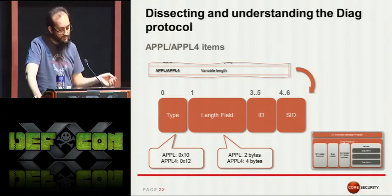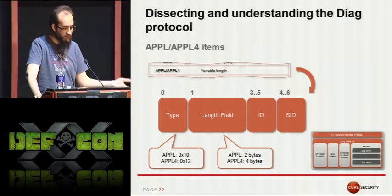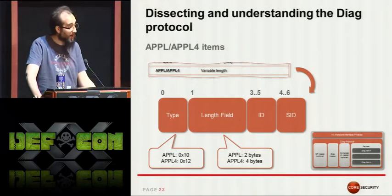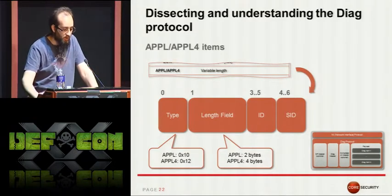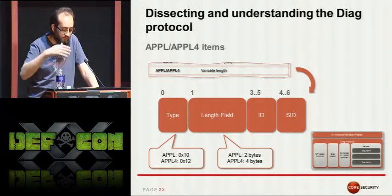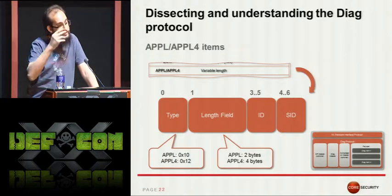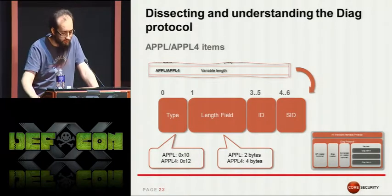We will focus on the APPL and APPL4 items, which carry the most relevant information. Each one of these items has its own header. The first field is the type, which denotes if it's an APPL or APPL4 item. Then there's a length field — either two or four bytes — followed by two additional identifiers: an ID and SID. During my tests I identified 172 different combinations of IDs and SIDs. So if you look at a DIAG packet, you can find several different APPL items, each with their own meaning and format.